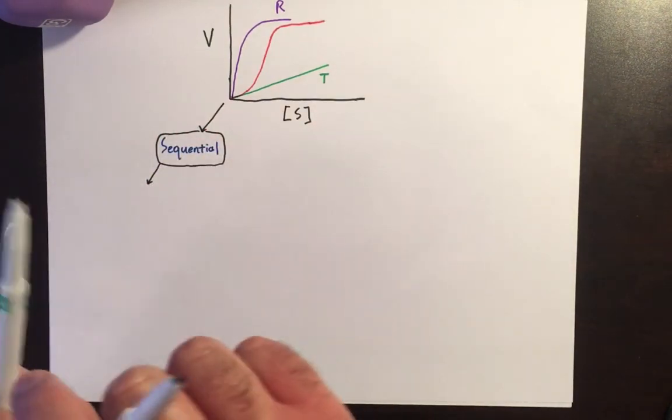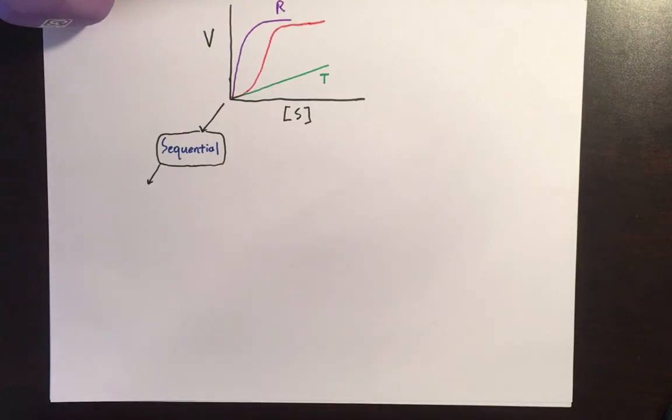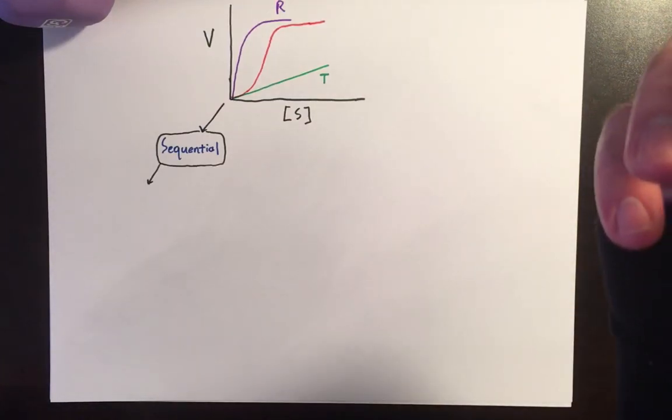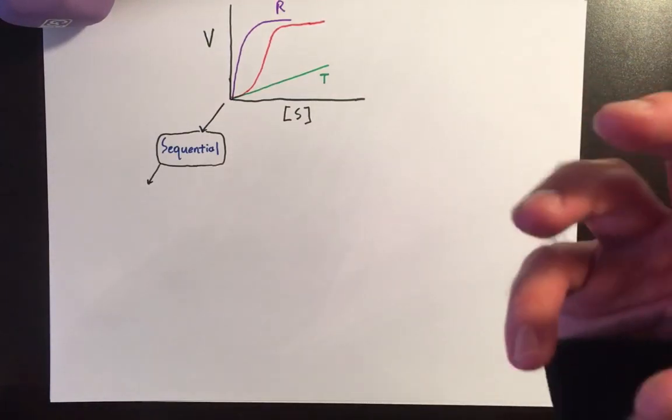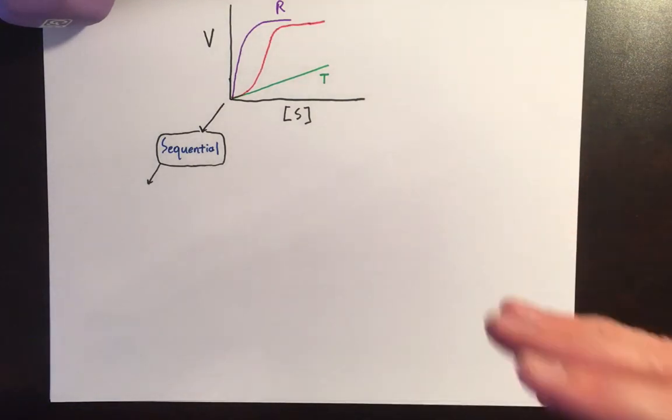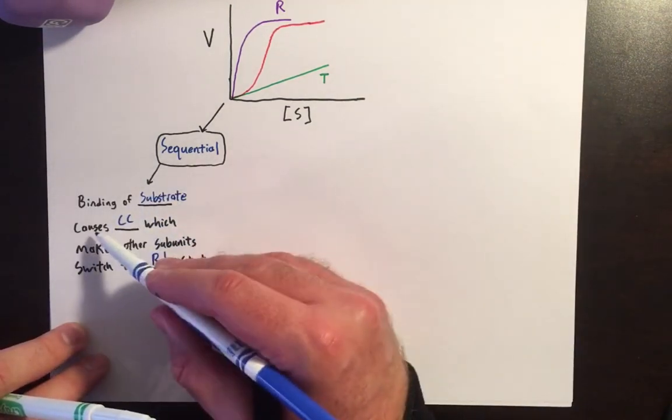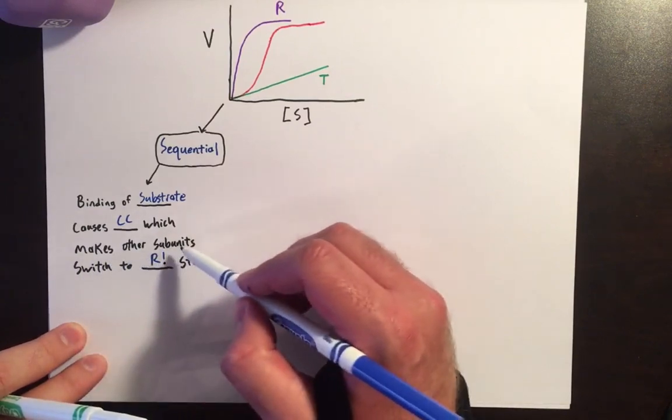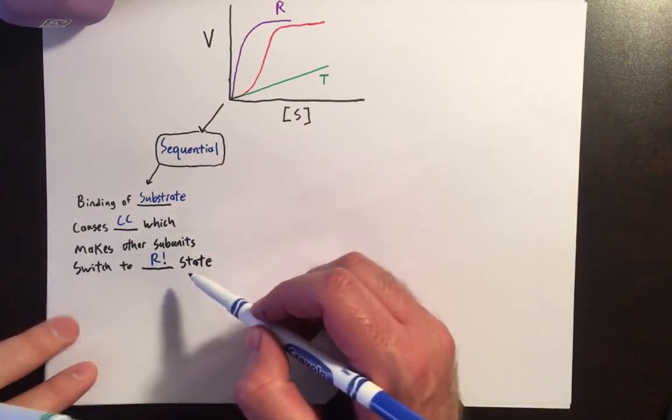So I'm going to start off talking about the sequential model. In the sequential model, what happens is the binding of one substrate induces a conformational change in the neighboring subunits that makes them more open to accepting that substrate, so they shift to the R-state. The binding of the substrate causes a conformational change which makes the other subunits switch to the R-state.